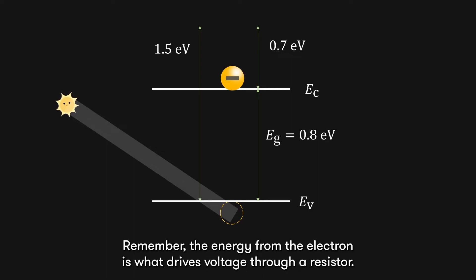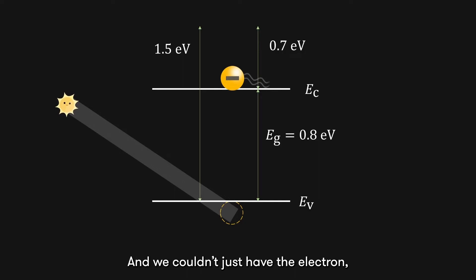Remember, the energy from the electron is what drives voltage through a resistor, and we couldn't just have the electron but without the energy. Otherwise, there wouldn't be sufficient voltage.